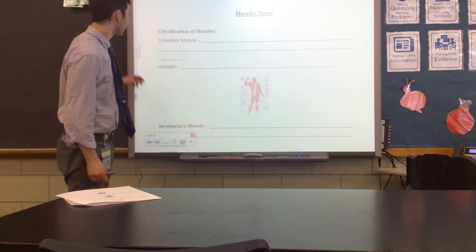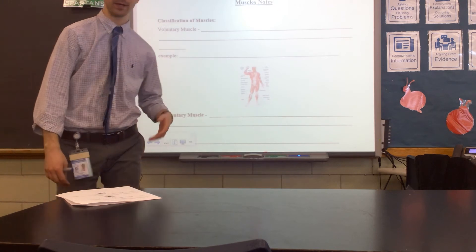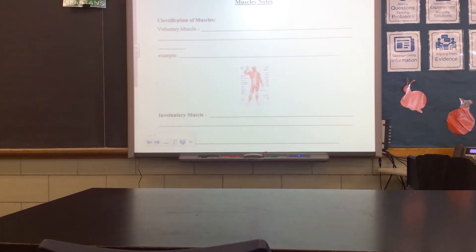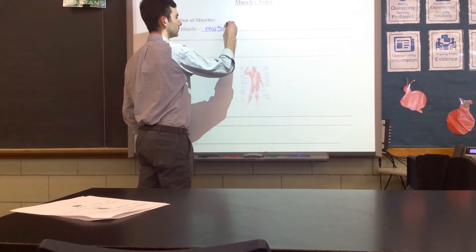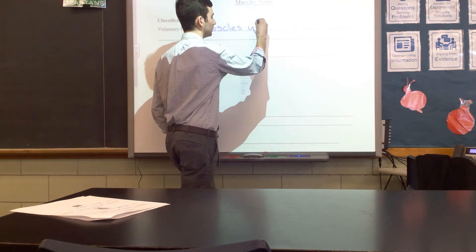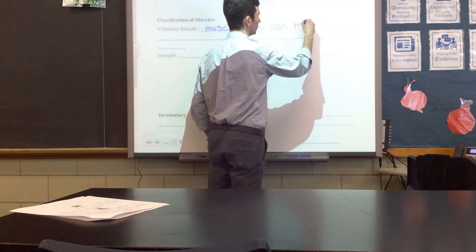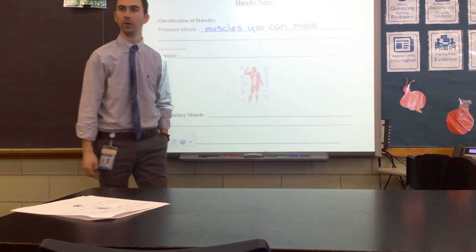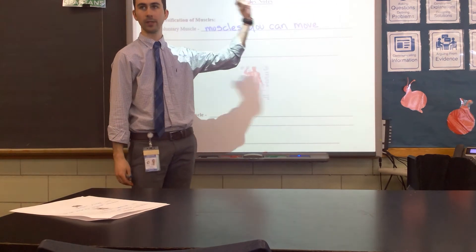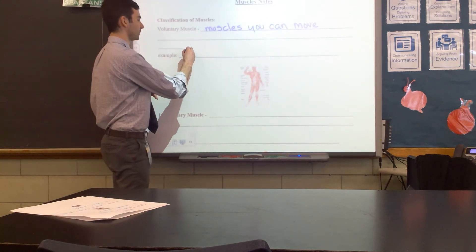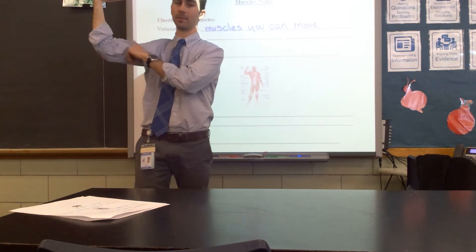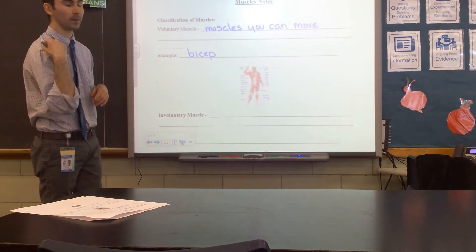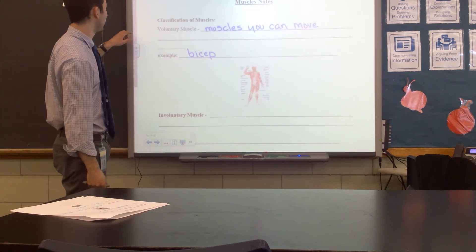Next, we need to talk about muscles. There are a couple of different types, or classifications, of muscles. One type is a voluntary muscle — this is a muscle that you can control. Any muscle you can move, like the muscles in your legs or arms, are voluntary muscles. An example is your bicep, the muscle on the upper part of your arm. We can move our bicep to help move our arm, so it's a voluntary muscle.